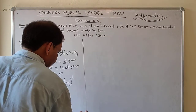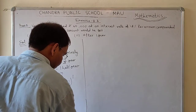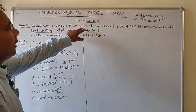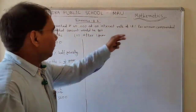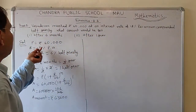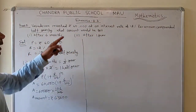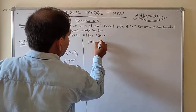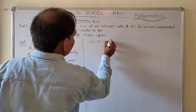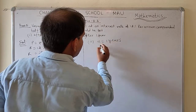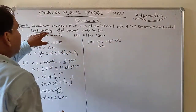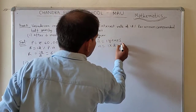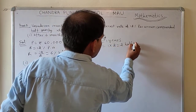Now for the second case, the principal and rate percent remain the same. Only the time changes. Time N = 1 year. Since the rate is compounded half-yearly, the time is multiplied by 2, so N = 1 × 2 = 2 half-year periods.